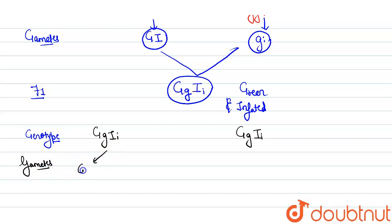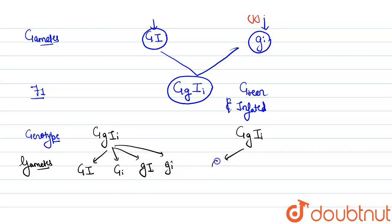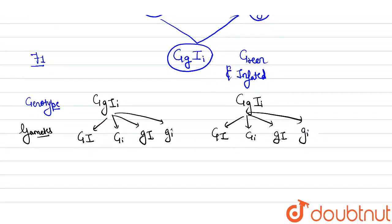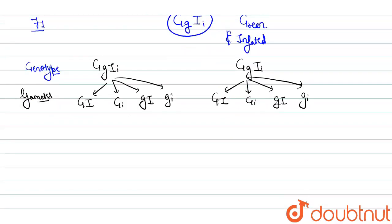The gametes for GgIi are formed as: capital GI, capital G small i, small g capital I, and small g small i (GI, Gi, gI, gi). The same four types of gametes apply to both parents. Now we have to draw the Punnett square to calculate the phenotypic ratio of the F2 generation.